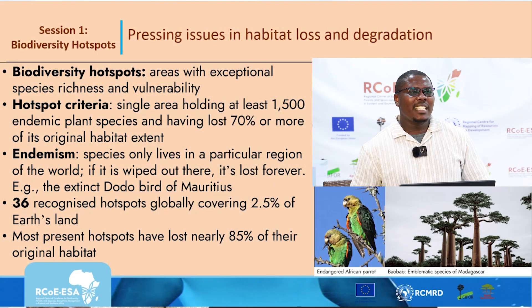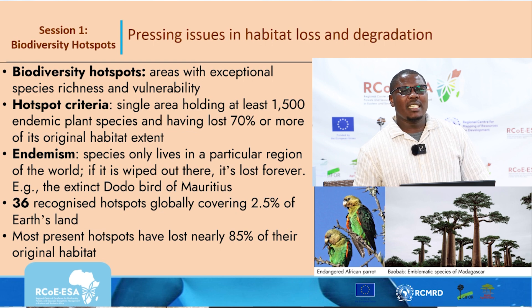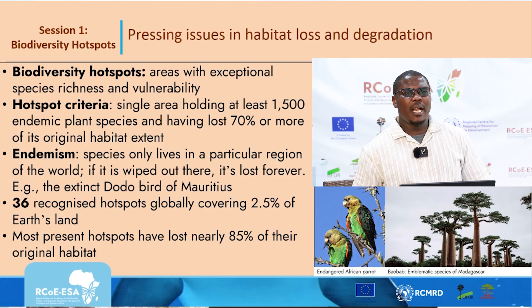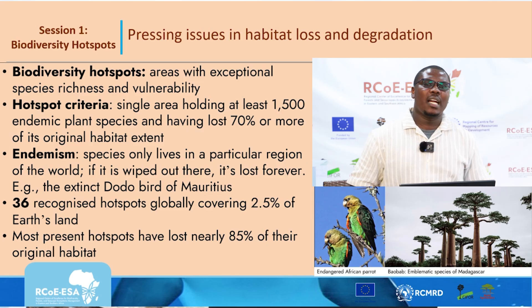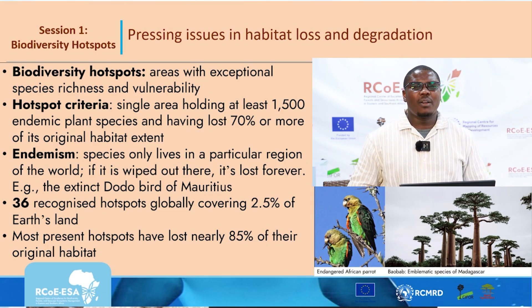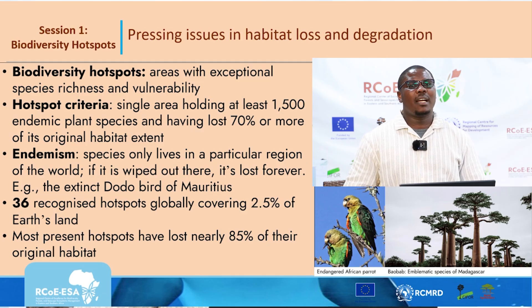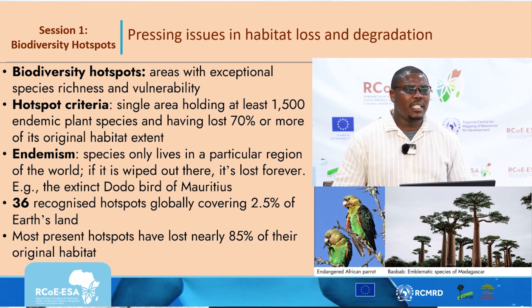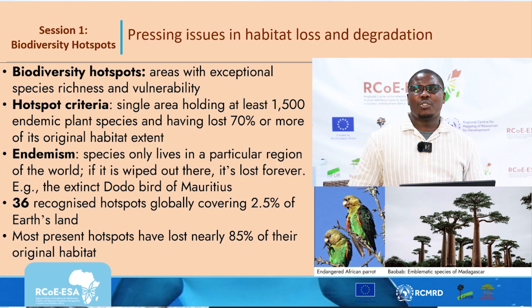When we're talking about biodiversity hotspots, we need to understand the criteria used for areas we want to prioritize for conservation. Biodiversity hotspots are defined by exceptional species richness and vulnerability. Two criteria are commonly used: the area must have at least 1,500 species of vascular plants, and the area should have lost about 70 percent of its original extent. When an organism is only found in that specific area, we term it endemic. So if that area is completely lost, that species is also lost — which is where we talk about species extinction.